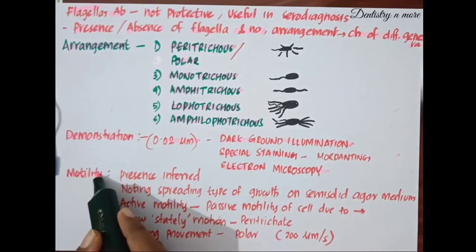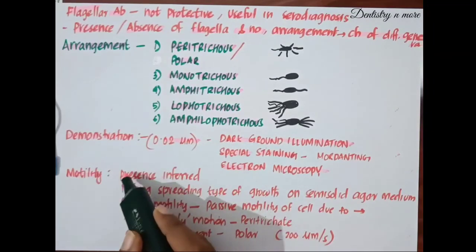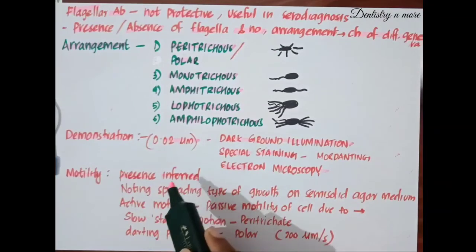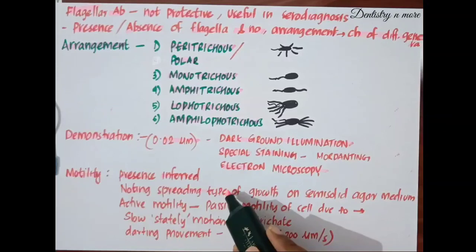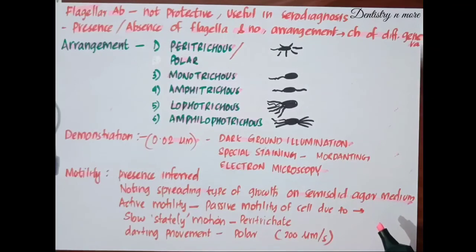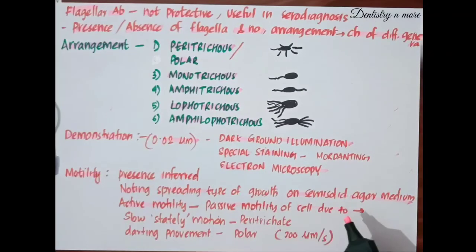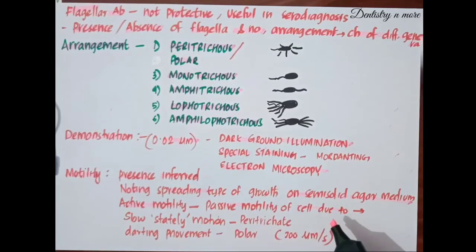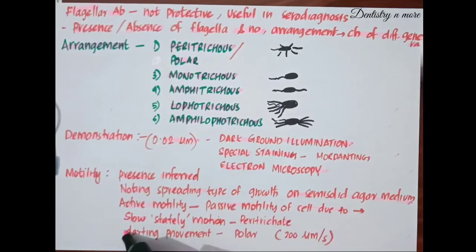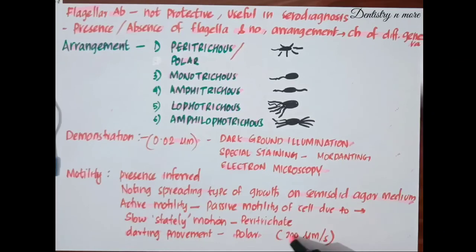Moving on to the motility of bacterial flagella — due to the difficulty of demonstrating flagella directly, their presence is usually inferred from the motility of bacteria. Motility can be observed by noting the spreading type of growth on a semi-solid agar medium. Under the microscope, actual motility has to be differentiated from passive movements such as Brownian movement or movement due to air currents. Bacterial motility may range from slow stately motion as seen in peritrichate flagella to darting movement in polar flagella. They move at a speed of 200 micrometers per second.